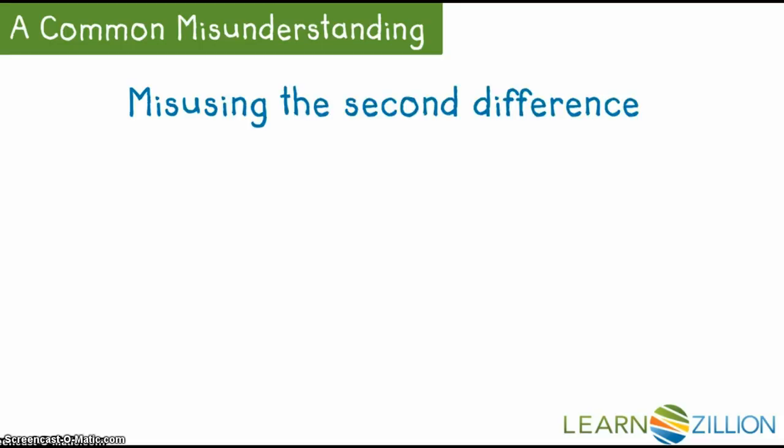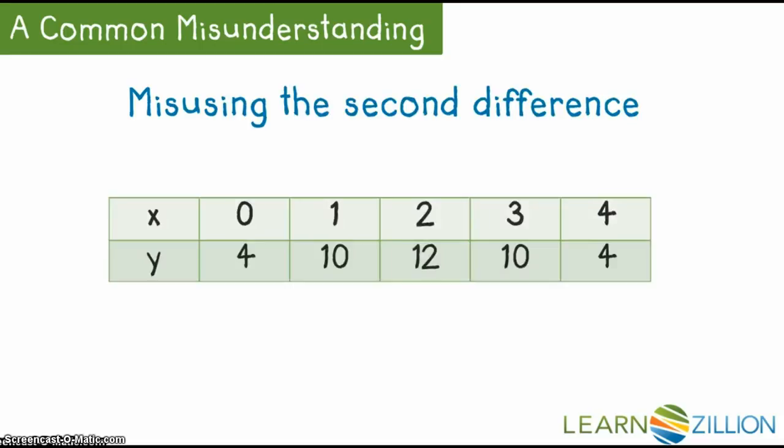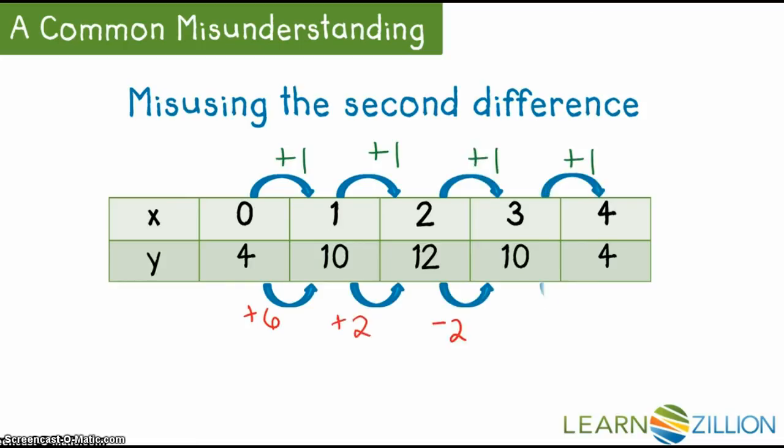One possible misunderstanding is misusing the second difference. Unlike linear equations where the constant change is the slope, the second difference of negative 4 is not used as part of the equation.